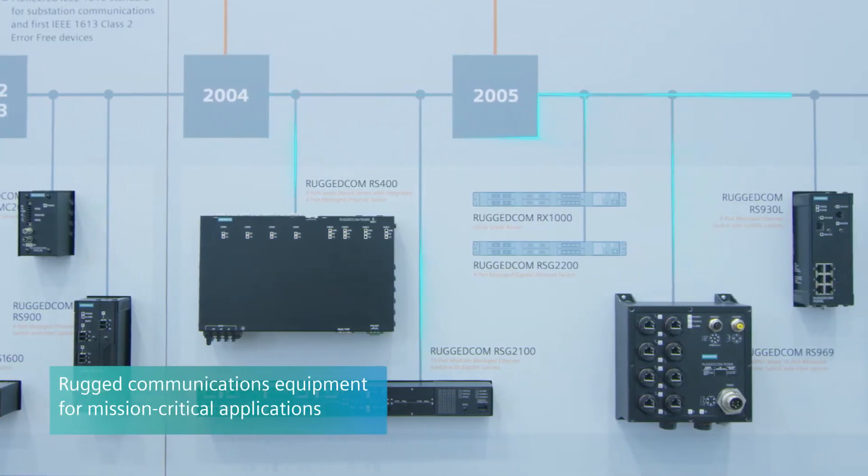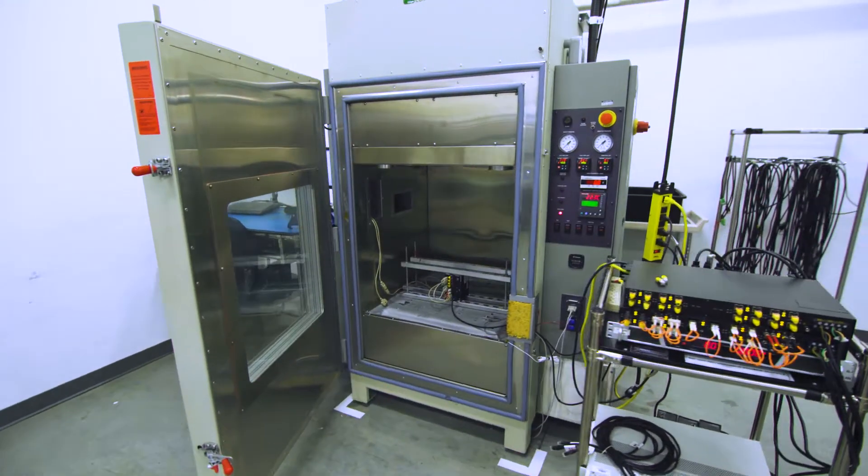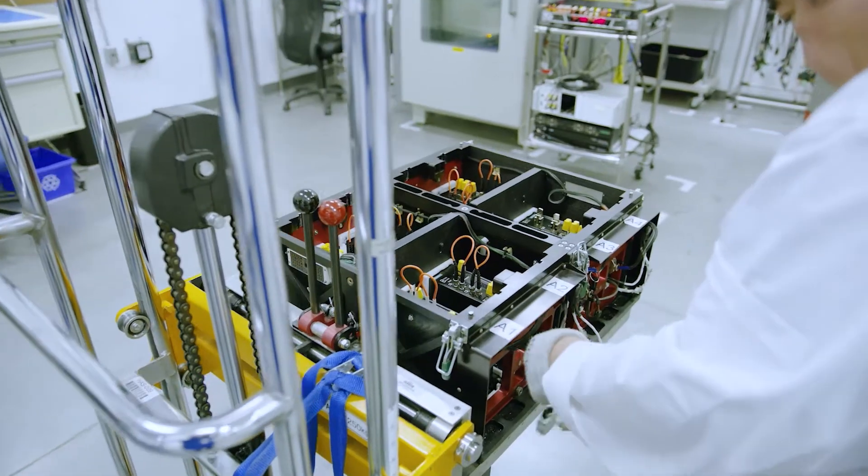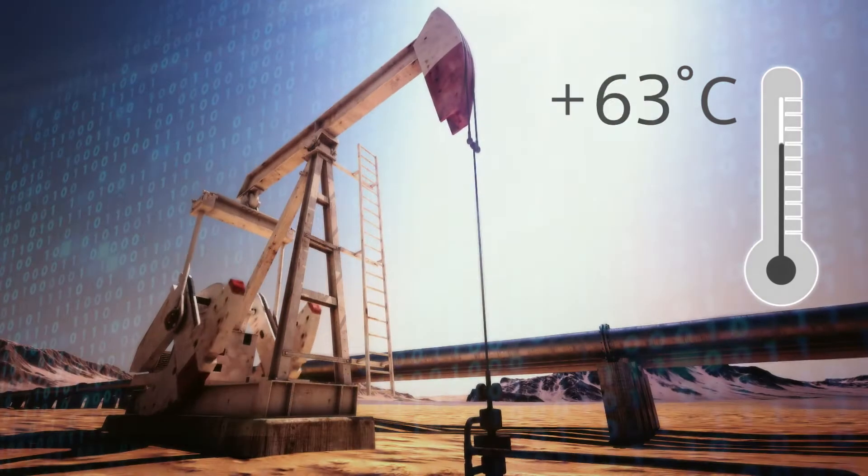RuggedCom is a Siemens product line of reliable communications equipment for harsh environments. RuggedCom products are rugged rated. They work in a wide temperature range from minus 40 degrees Celsius to plus 85 degrees Celsius.